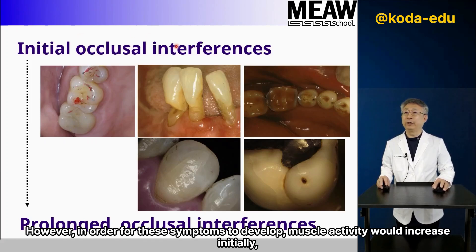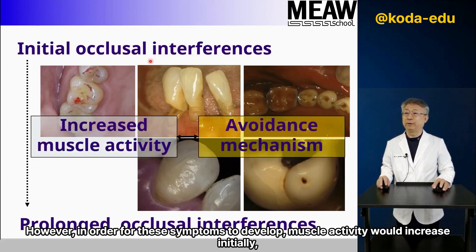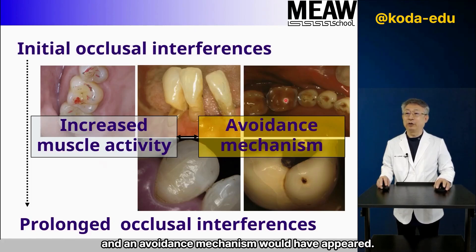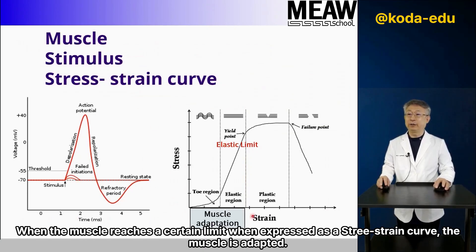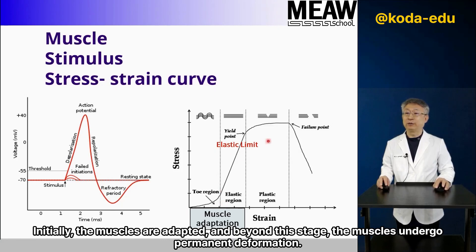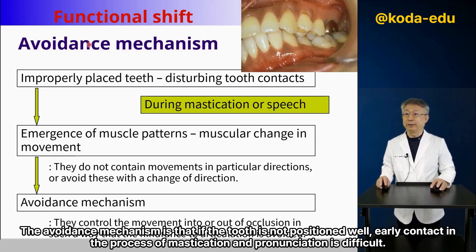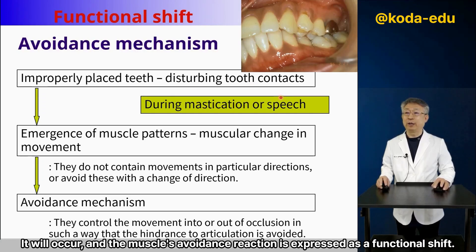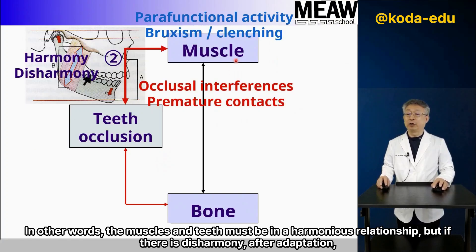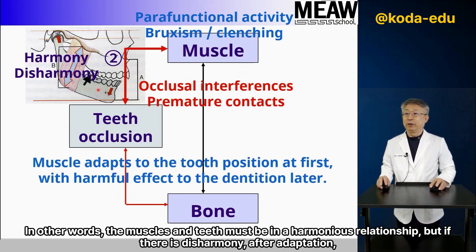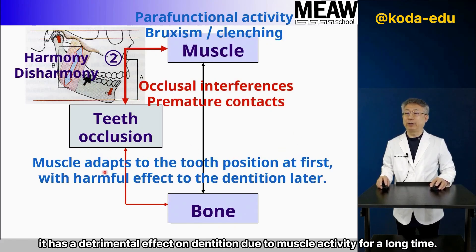However, in order for these symptoms to develop, muscle activity would increase initially and an avoidance mechanism would appear. When the muscle reaches a certain limit — expressed as a stress-strain curve — the muscle adapts. Initially the muscles are adapted, and beyond this stage the muscles undergo permanent deformation. The avoidance mechanism occurs when a tooth is not positioned well, causing early contact during mastication and pronunciation; the muscle's avoidance reaction is then expressed as a functional shift. In other words, the muscles and teeth must be in a harmonious relationship, but if there is disharmony after adaptation, it has a detrimental effect on the dentition due to muscle activity over a long time.